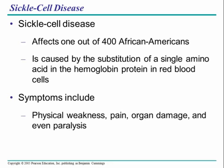Sickle cell disease is another example. It's an autosomal recessive disease. By autosomal, we mean one of the chromosomes between numbers 1 and 22 that is not a sex chromosome, which would be pair number 23. Sickle cell disease is caused by a substitution of just one amino acid in hemoglobin, and that creates a sickled shape for the red blood cell, inhibiting its ability to bind to oxygen.